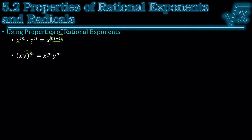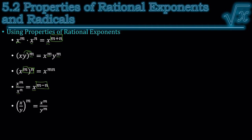Notice the exponent stays the same. Here we have exponent, parentheses, exponents, so we end up multiplying the exponents. And the same is true for division. If we divide with the same base, the base stays the same when we subtract the exponents. Here, we can distribute when we divide — notice the exponents stay the same. And lastly, a negative exponent means reciprocal.